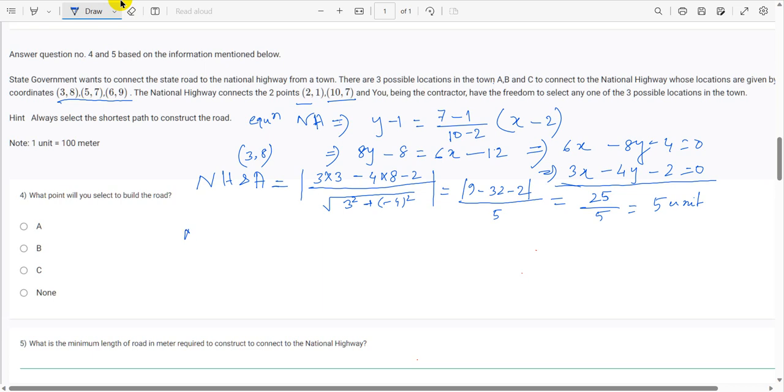Next, the distance between national highway and point B. Point B coordinate is 5 comma 7. So 3 into 5 minus 4 into 7 minus 2 divided by root of 3 squared plus minus 4 squared. So it is 15 minus 28 minus 2 divided by 5. So it is 15 by 5 which is 3 units.